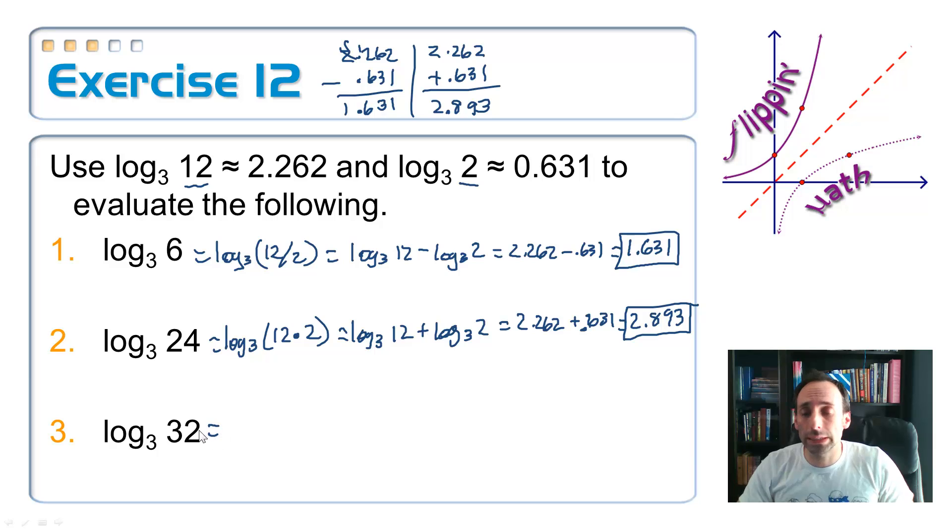So, last one. Let's see. We've used the quotient property. We've used the product property. I wonder if we have to use the power property in the next one. Log base 3 of 32. So, speaking of powers, is there any power that we could raise either 12 or 2 to in order to get 32? Not 12, because to the first power of 12, the second power is 144. How about 2? Log base 3 of 2 to the fifth power. There we go. That's a 5. You probably can't read that. 5.